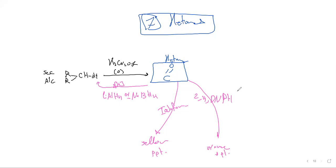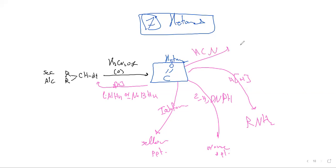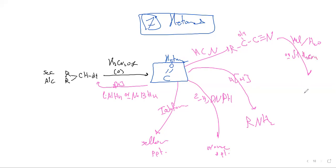Ketone can also be reduced to form an NH2 amine. It also reacts with HCN, the same as aldehyde, to form a nitrile. That nitrile can then be converted by reacting with HCl and H2O, or diluted H2SO4, to form carboxylic acids.